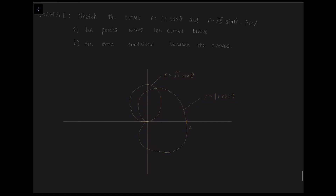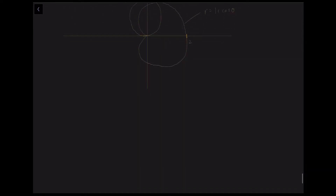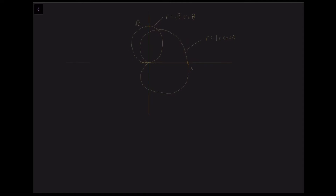The second question asks us to find the points where the curves meet. The curves will meet when both equations are equal to each other. So we let 1 plus cos theta equal root 3 sin theta.